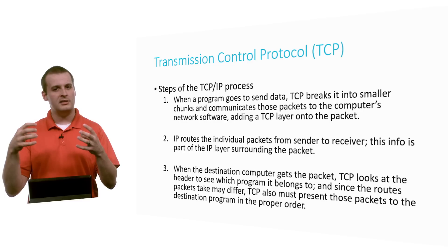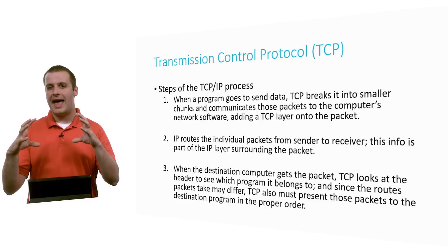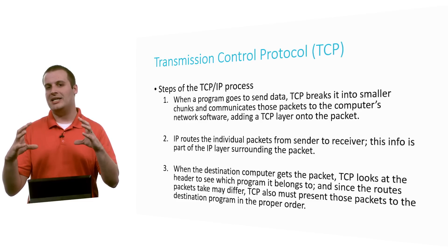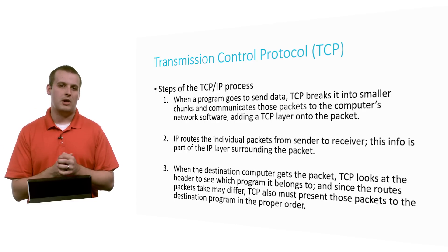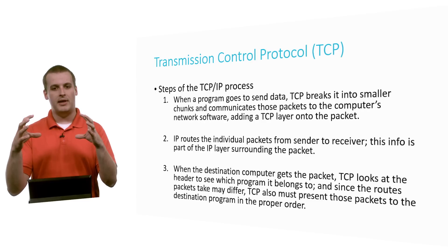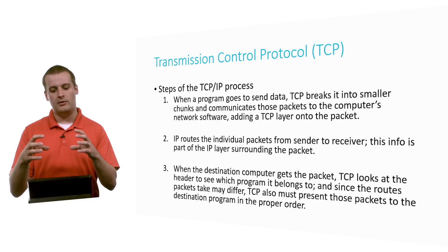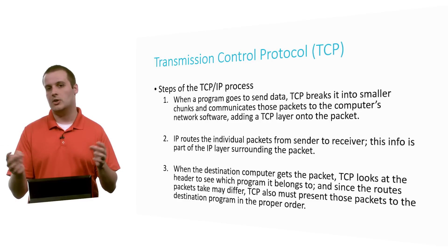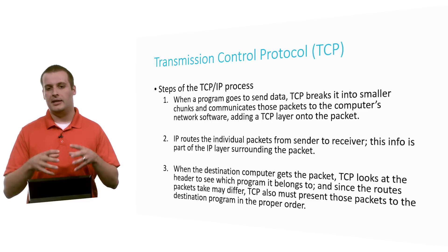It's sort of like one of those nesting dolls. We have the data in the middle, then TCP on top of it telling it where the data is supposed to go — what port or service on a machine. Around that is the IP layer, specifying what IP address and what machine is actually getting this. That packet, wrapped with all those layers, is sent through the router network using internet protocol. When the receiving machine gets it, it looks at the IP layer, confirms that's its IP address, strips that layer off, then sees the TCP layer and determines what port it's going to and what packet number it is — for example, packet 8 of 15.